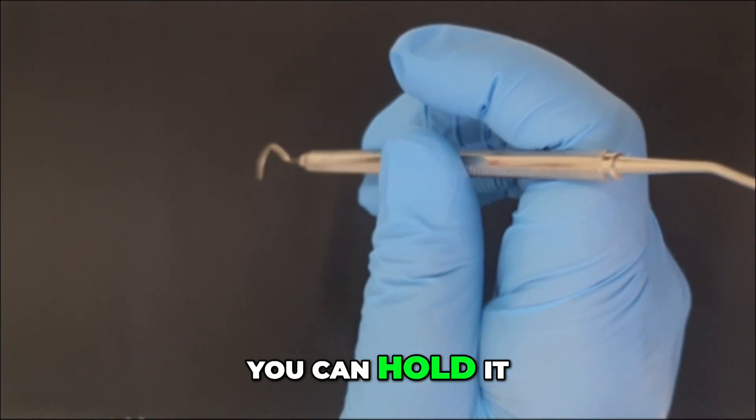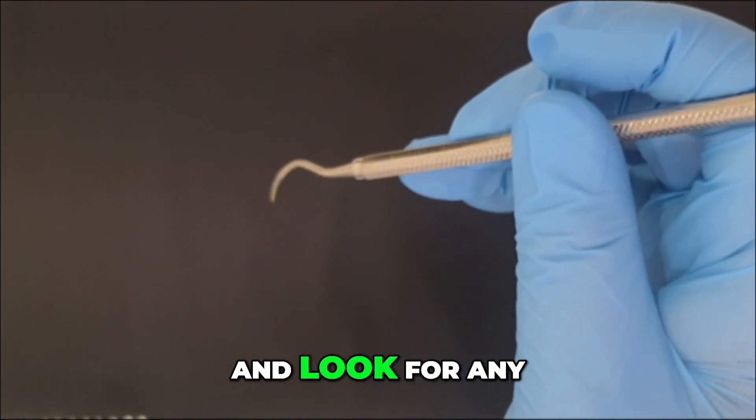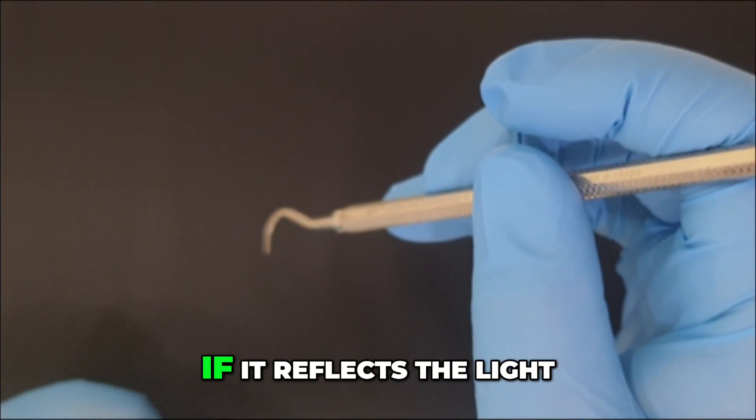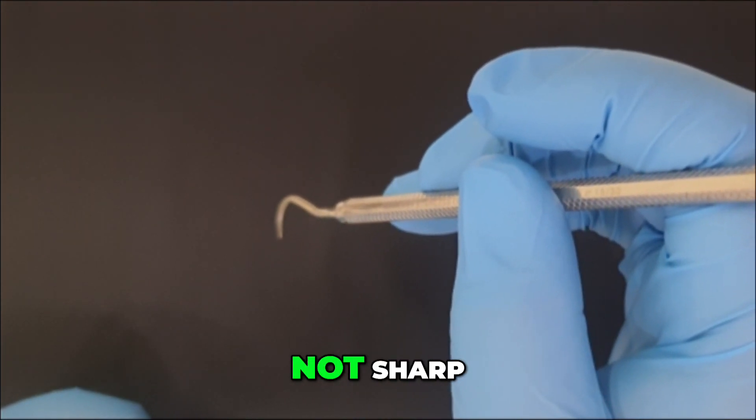One, you can hold it against the light and look for any reflection on the cutting edge. If it reflects the light, then the instrument is not sharp.